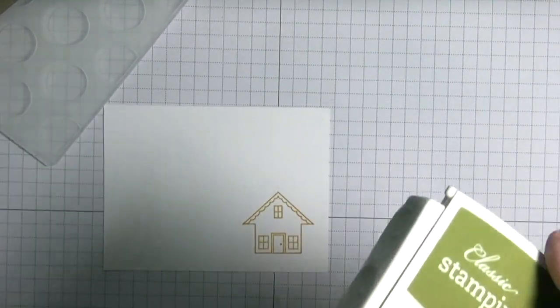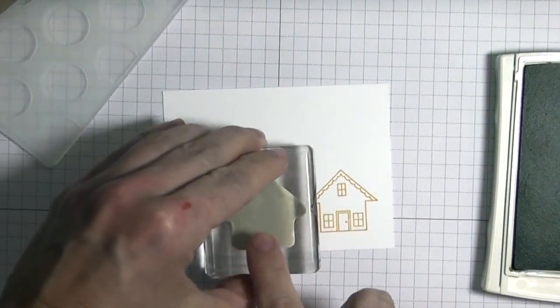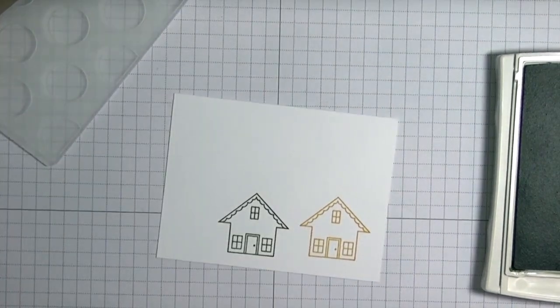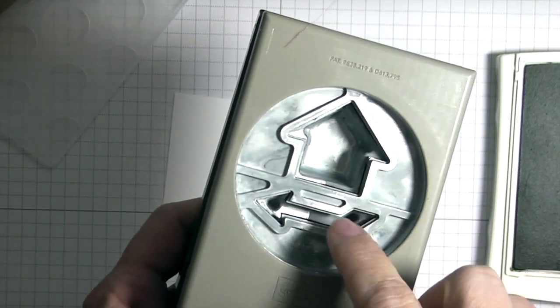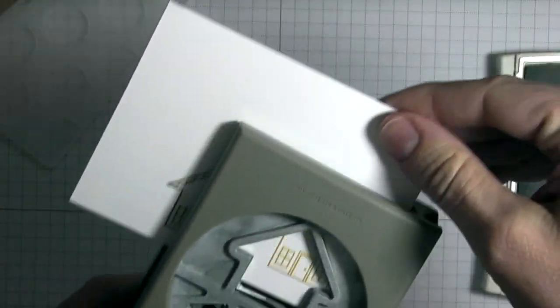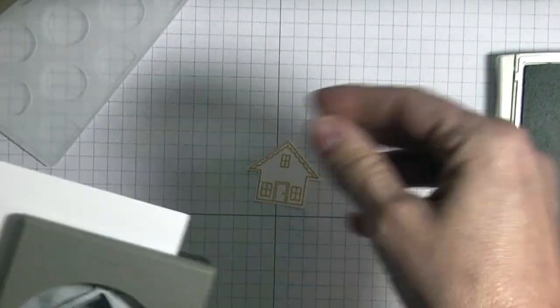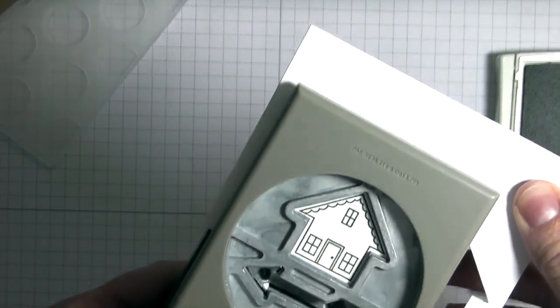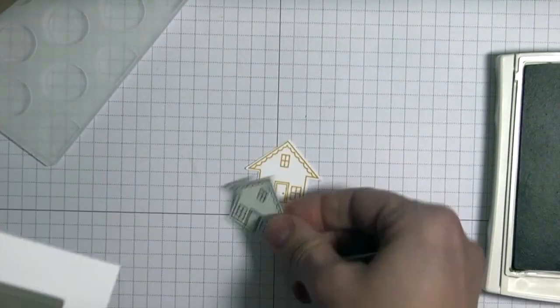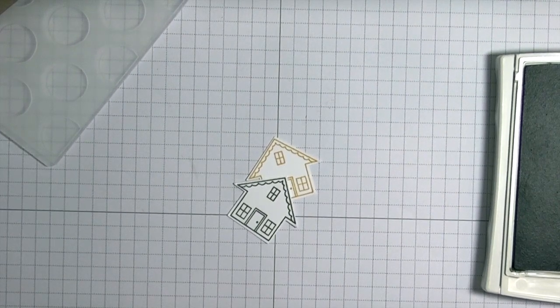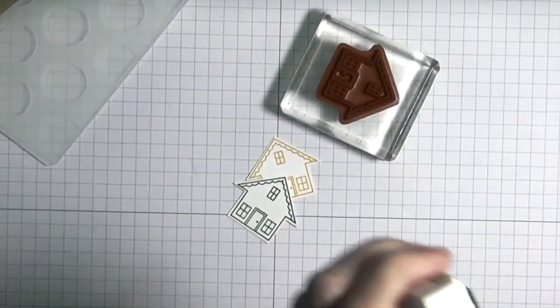Now I'm going to use the Old Olive. I'm stamping the images close to the bottom because if you look at the back side of the punch, I don't want to necessarily punch that out. You'll just line it up and punch like so, and then you are going to do the same thing with the stamp.